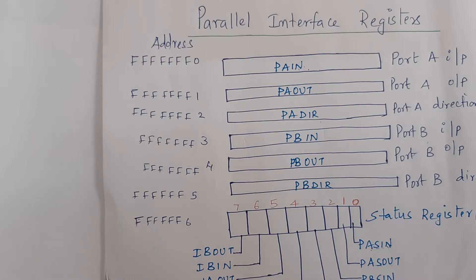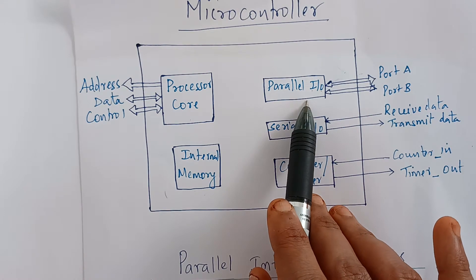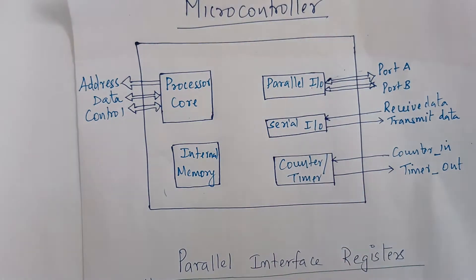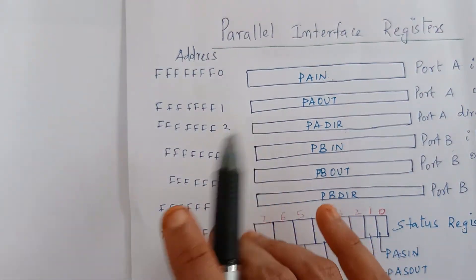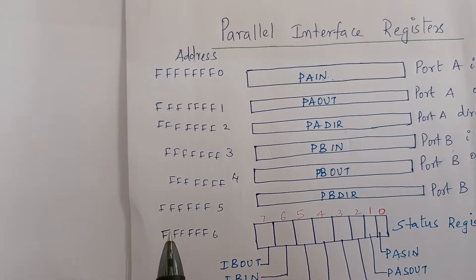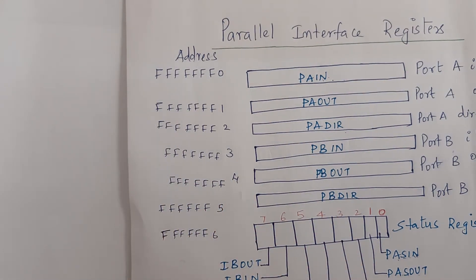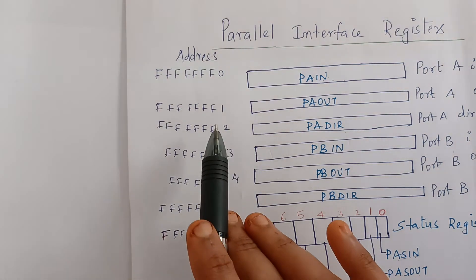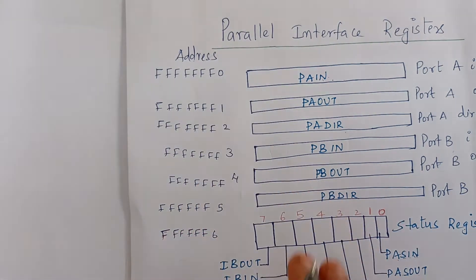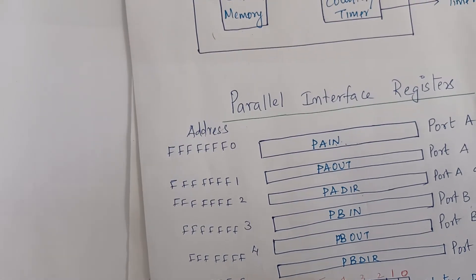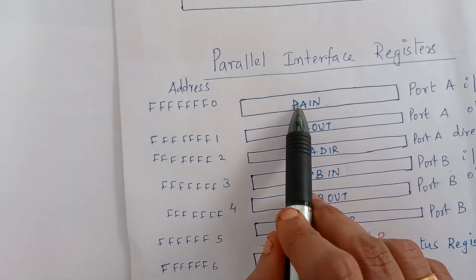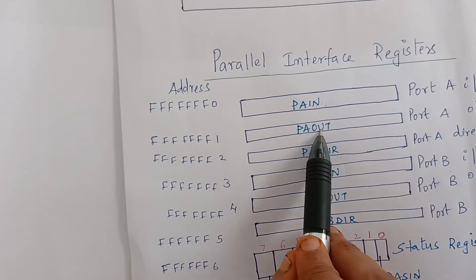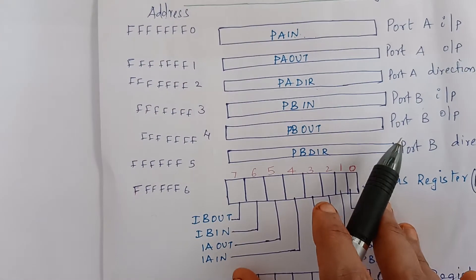We are going to discuss the data transfer operations for the parallel input-output interface. We are having memory addresses, and the data transfer operations involve Port A and Port B. These are having 8-bit registers, and we are mapping memory-mapped addresses, assigning these to the registers.